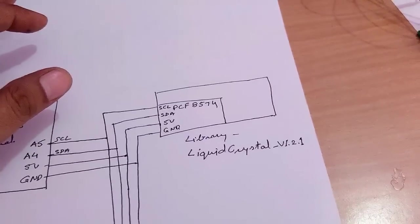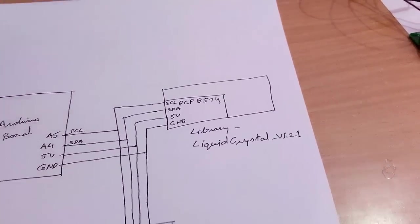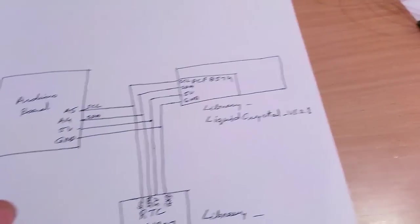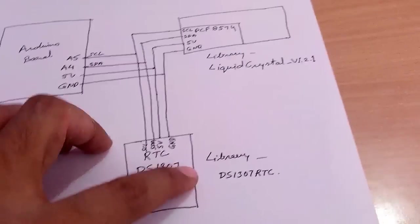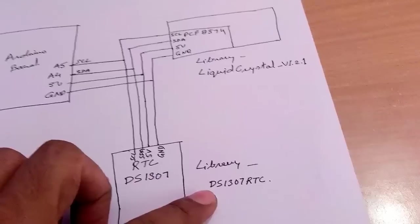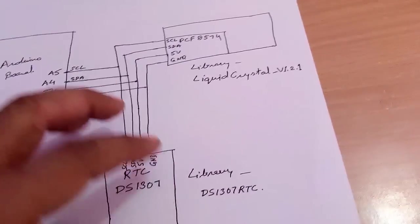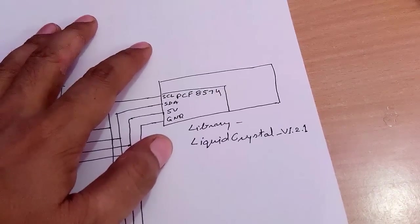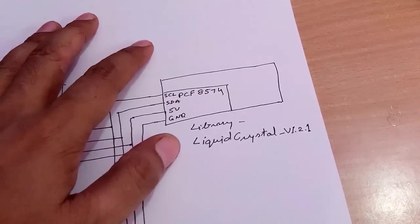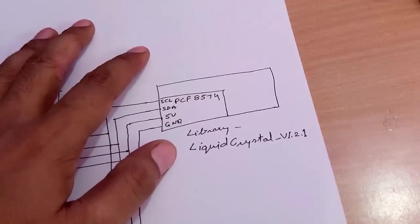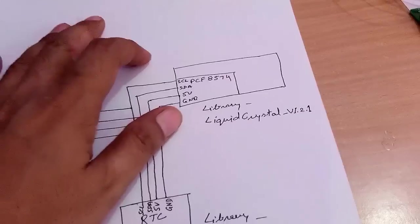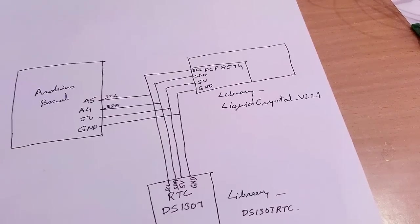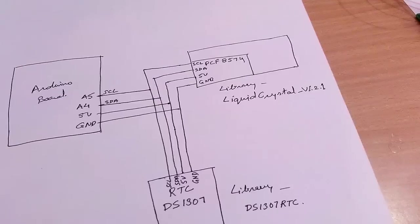To get all devices working, we downloaded a library named DS1307RTC for the RTC, and for the LCD display board we downloaded a library called LiquidCrystal_I2C v1.2.1. Both of these libraries are available online and can be downloaded and used.